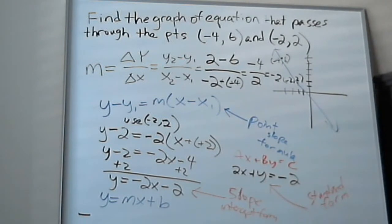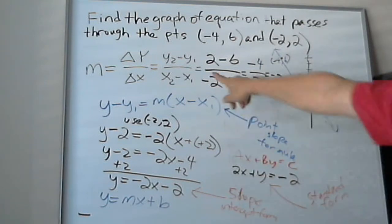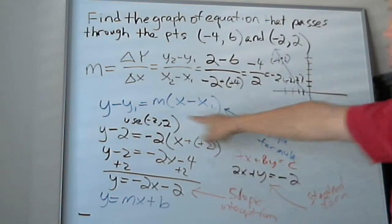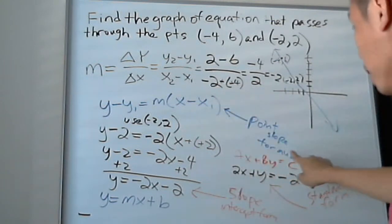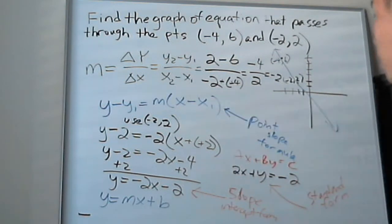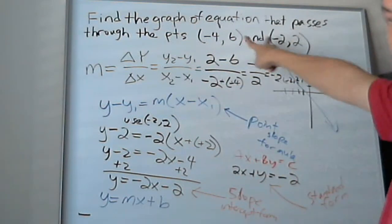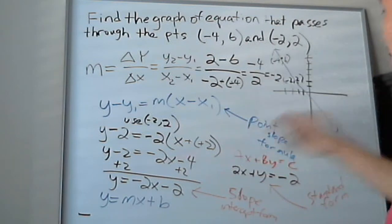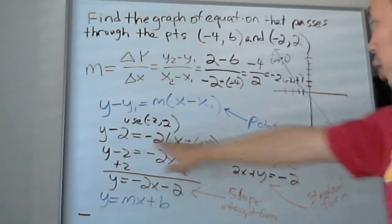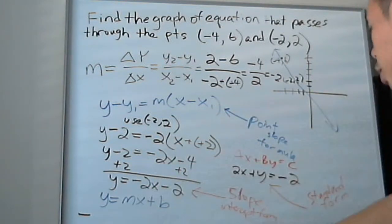So let's do a quick review. Find a graph or equation that passes through the points negative 4, 6, and negative 2, 2. So first of all, you find a slope that you can see here. After you find a slope, now you put in the point slope formula, which is y minus y1 equals m times x minus x1. And then you just use any of the points from the graph, because this is a point slope formula. You can use any point. It doesn't matter. You can use, you know, there's three points. You just use one of them. It doesn't matter.